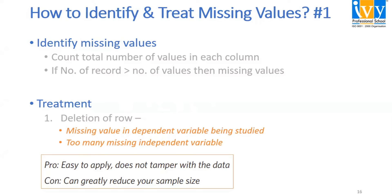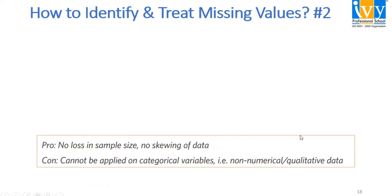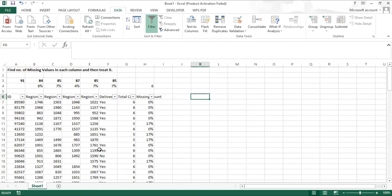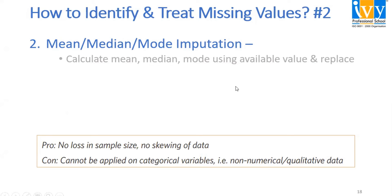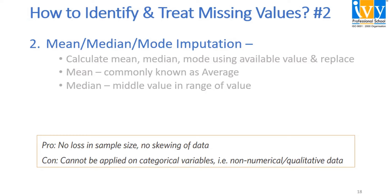Now let's see another way to identify and treat missing values. The methods are mean, median, and mode imputation. We calculate the mean, median, or mode using available values and replace the missing ones. Mean is commonly known as the average — the sum of all values divided by the total count. Median is the middle value in the range, and mode is the value that occurs most often.